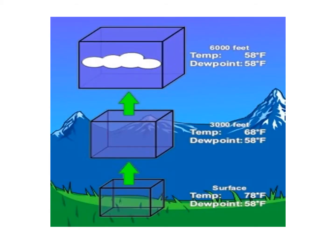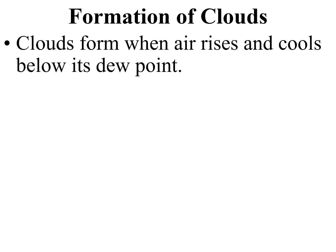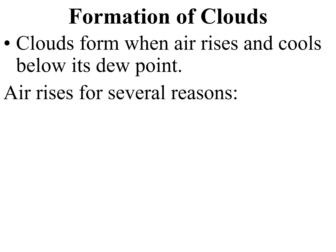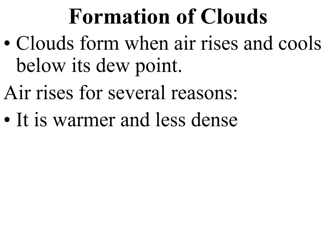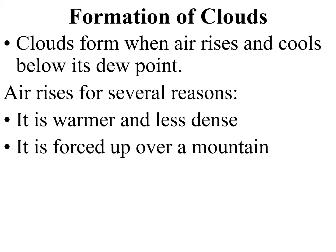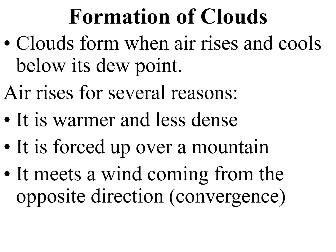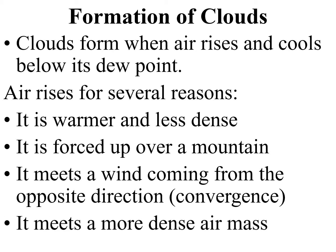As a box of air rises, it expands and expands. The temperature is lowering because the amount of heat is now spread out over a larger area. At some point, if it reaches its dew point, condensation will occur. Clouds will form when air rises and cools below its dew point. Air can rise for several reasons: if it is warmer like a hot air balloon, it's less dense and up it goes; if it's forced up over a mountain; if it meets a wind coming from the opposite direction — that would be convergence; or if it meets a more dense air mass and has to rise up over that.